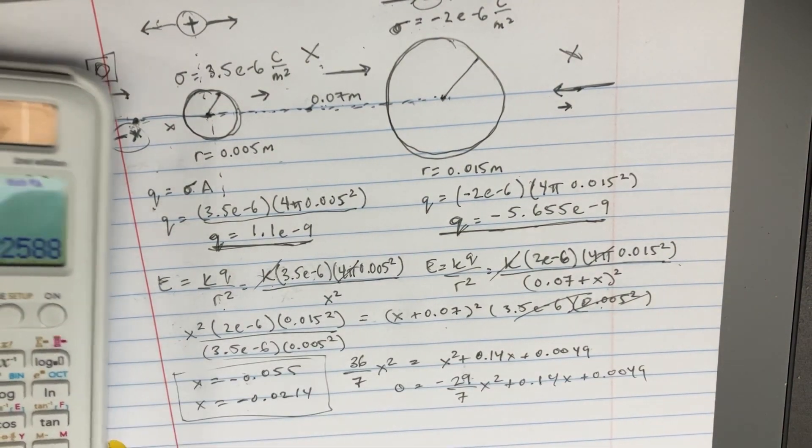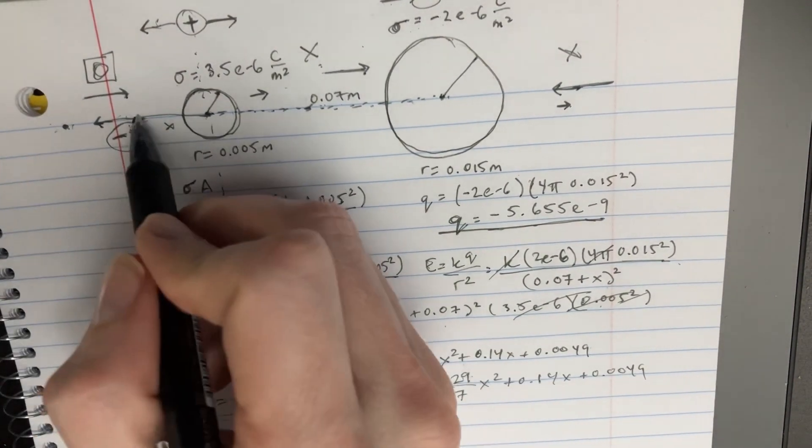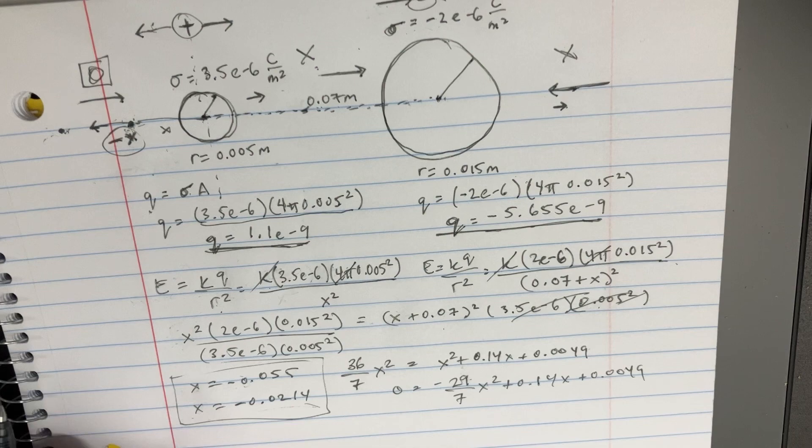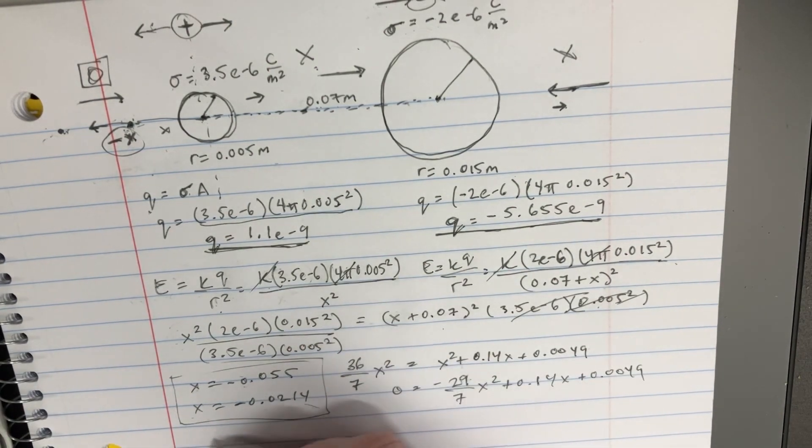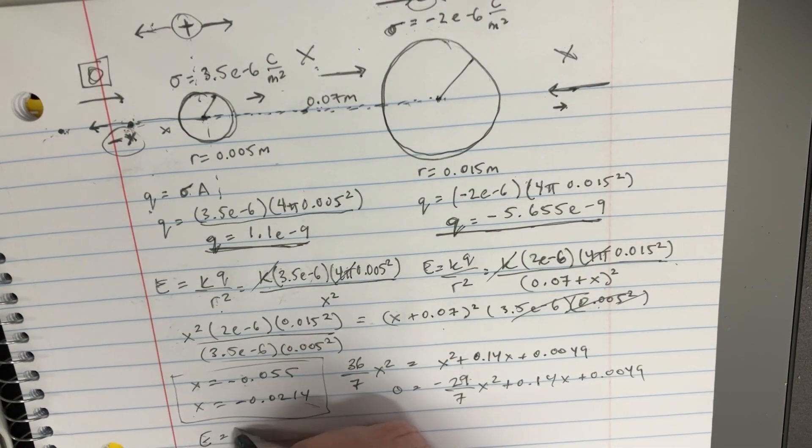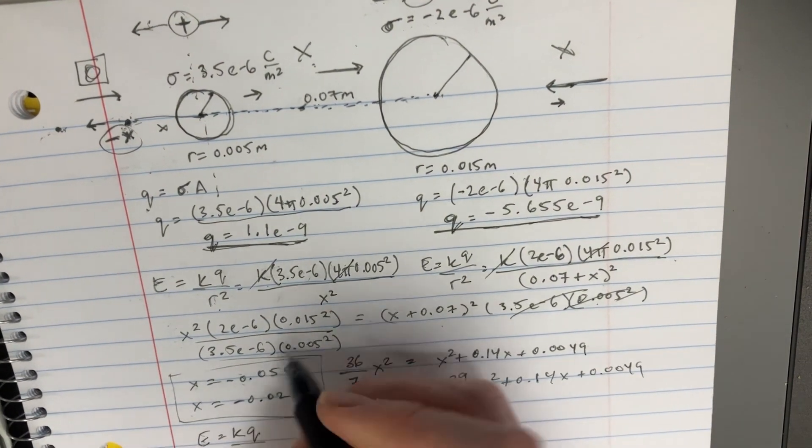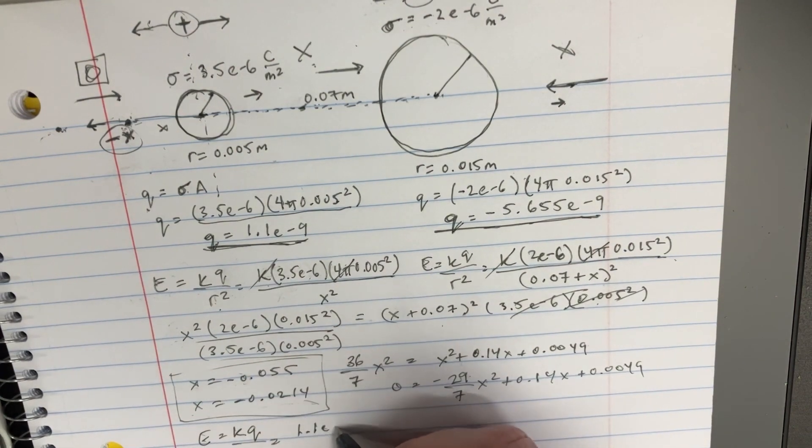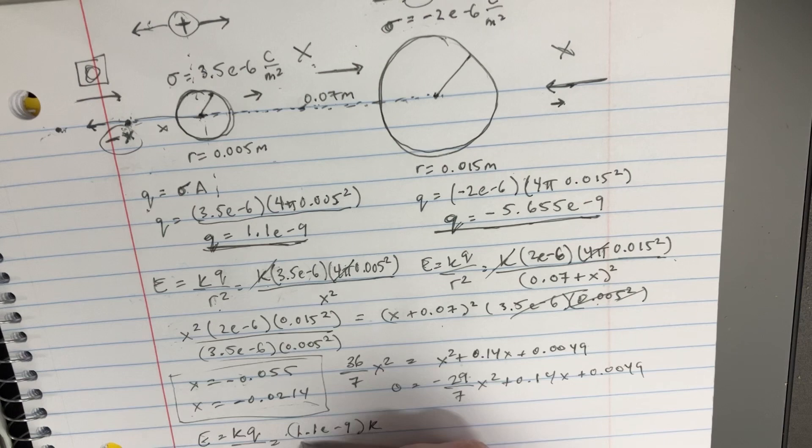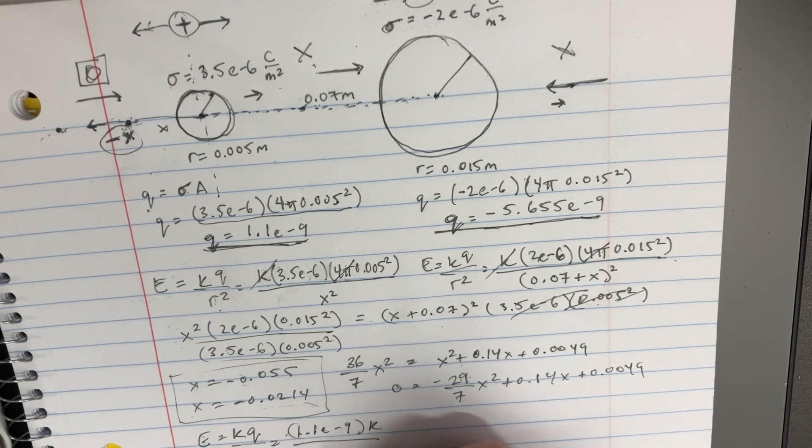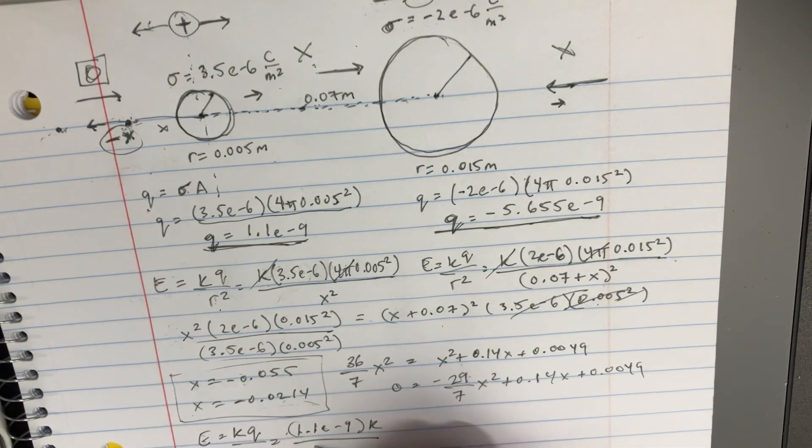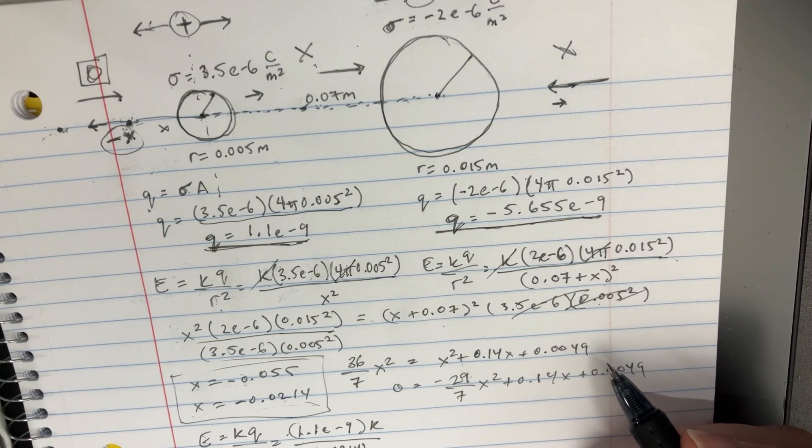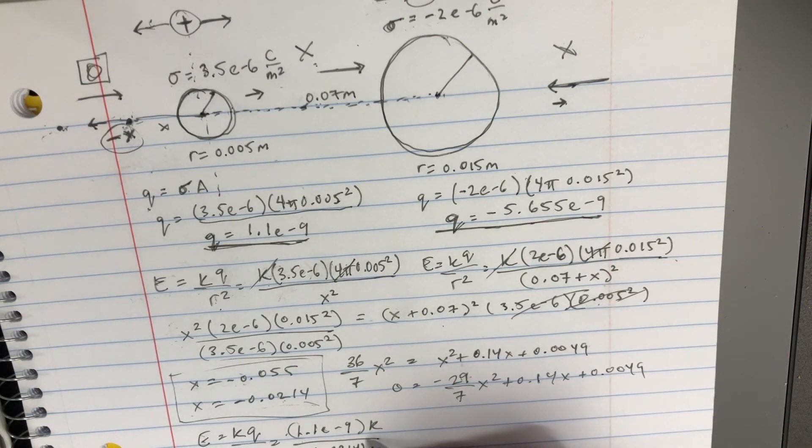We're going to see which one is the correct negative number. So, we'll try the first one here. We plug that back into our equations of e equals kq over r squared. In the first one, the q, we'll just go easy one. So, 1.1 e to negative 9 times k, divide that by, this one is going to be 0.0214. And we'll see if that is the correct answer there.